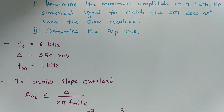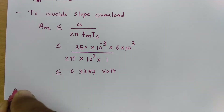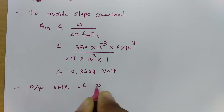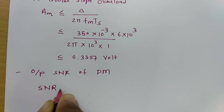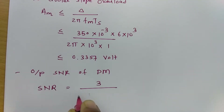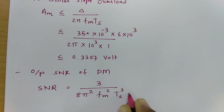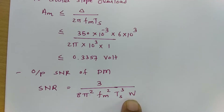The second part of the problem asks us to determine the output SNR. The output SNR formula for delta modulation, which was derived in a previous session, is: SNR = 3 divided by 8π² fm² Ts³ W, where W is the bandwidth. We have all the data except W, so we need to calculate W first.